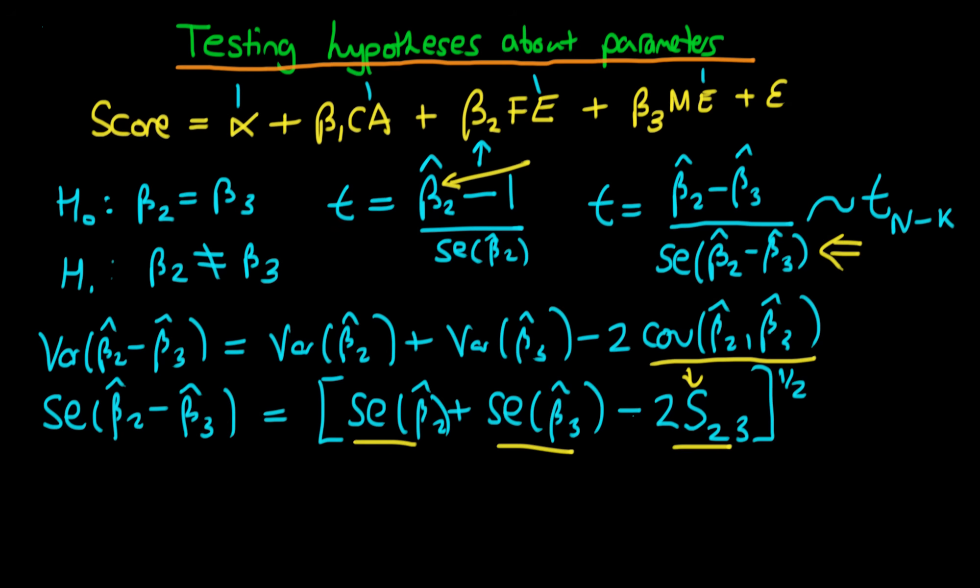But I want to introduce another way. Recognize that if this null hypothesis is true, then β₂ - β₃ should equal zero. If it's not equal to zero, we've got a violation of that condition. Let's assume that instead of being equal to zero, it equals some amount δ. In the next video we're going to use that to help us test this particular hypothesis about parameters.